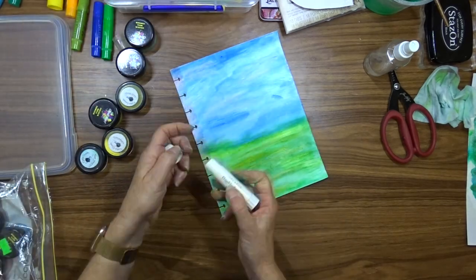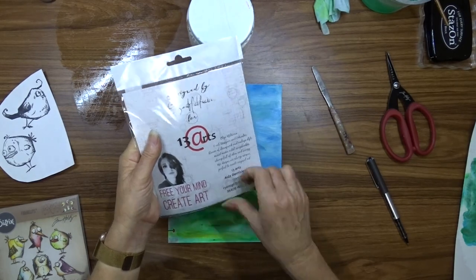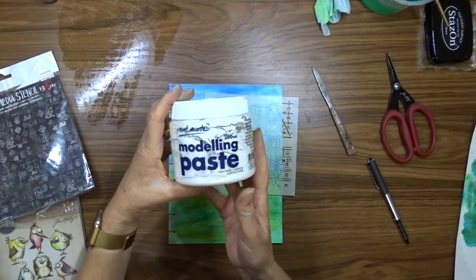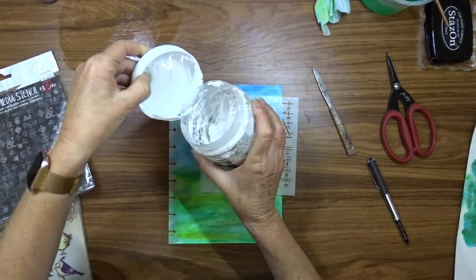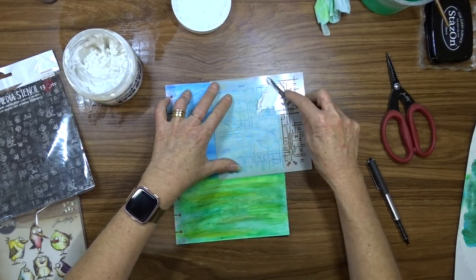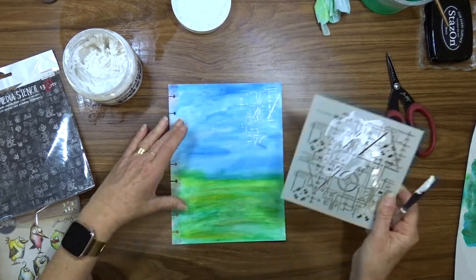I'll use the same technique to apply the gelato, wiping it on with my wet finger or smoothing it out with my wet finger. I'm using this 13 Arts geometric shaped stencil to apply some modeling paste that dries white to the background.